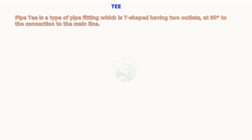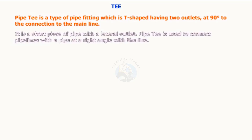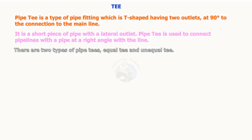The pipe T is a type of pipe fitting which is T-shaped, having two outlets at 90 degrees to the connection to the main line. It is a short piece of pipe with a lateral outlet. The pipe T is used to connect pipelines with a pipe at a right angle with a line. There are two types of pipe T's: equal T and unequal T.